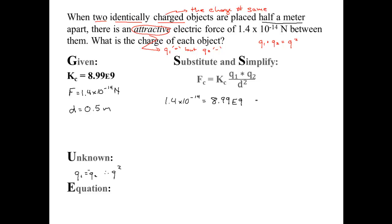I don't know what the charges are, so I'm just going to leave it as Q squared, divided by, my distance is 0.5, but I need to square it.